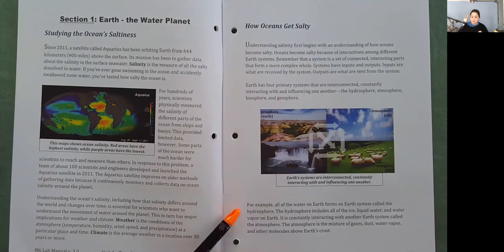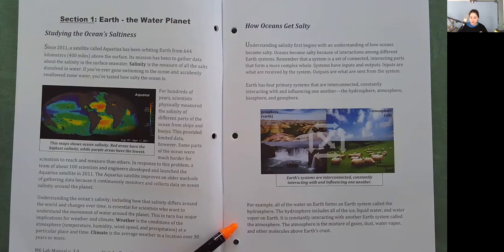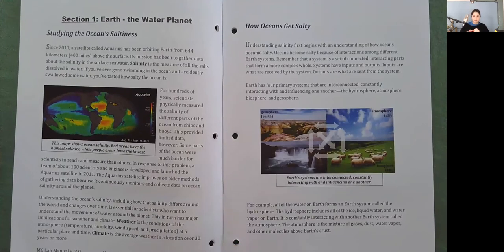For example, all of the water on Earth forms an Earth system called the hydrosphere. The hydrosphere includes all of the ice, liquid water, and water vapor on Earth. It is constantly interacting with another Earth system called the atmosphere. The atmosphere is the mixture of gases, dust, water vapor, and other molecules above Earth's crust.